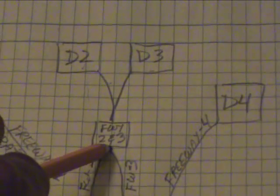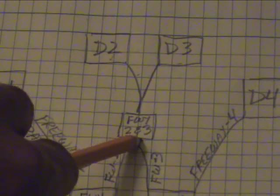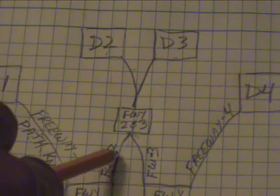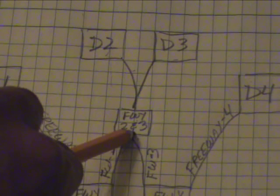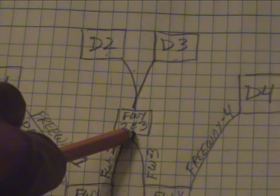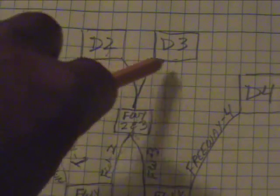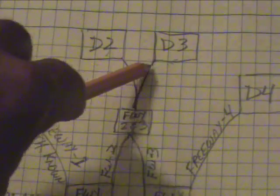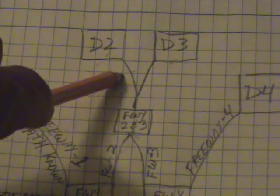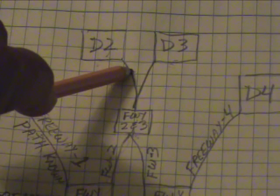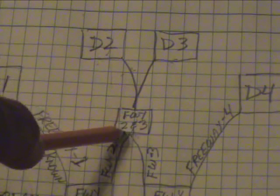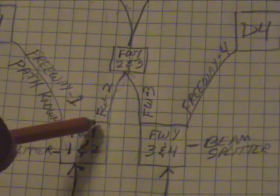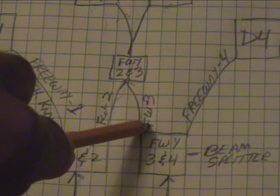This intersection meets up with freeway 3. Freeway 3 and freeway 2 meet up right here. If the particle hits either D2 or D3, then this is considered the unknown path.